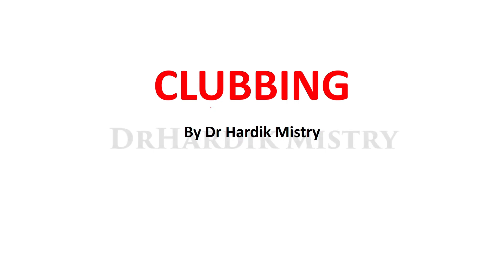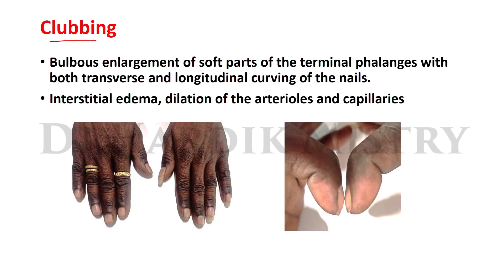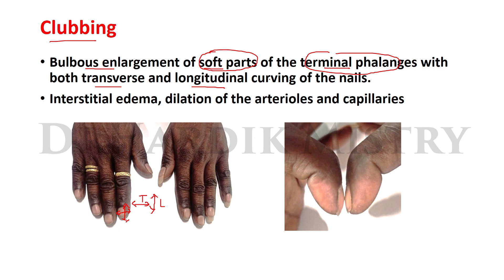Welcome to Practical Medicine. Today's topic is clubbing. Clubbing is the bulbous enlargement of soft parts of the terminal phalanges with both transverse and longitudinal curving of the nails. Inside clubbing, the nails become curved — both the transverse curvature and the longitudinal curvature of the nail are increased.